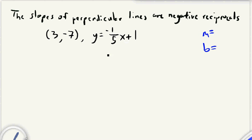Now, if we look at this line, the slope of this line, the M that's here is negative one-fifth. But the slope that we want, we want our M to be the negative reciprocal of that.